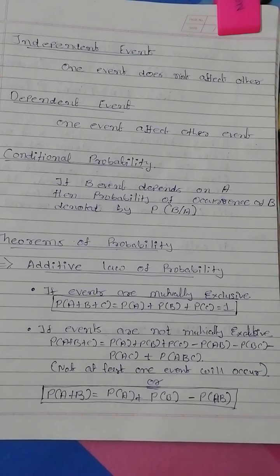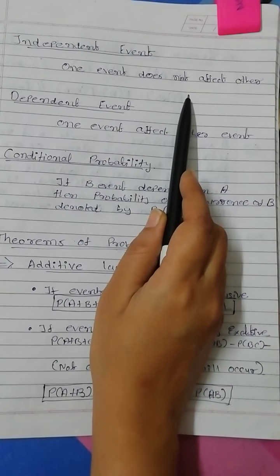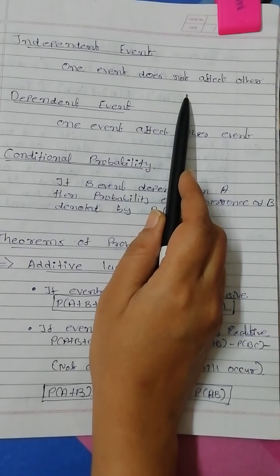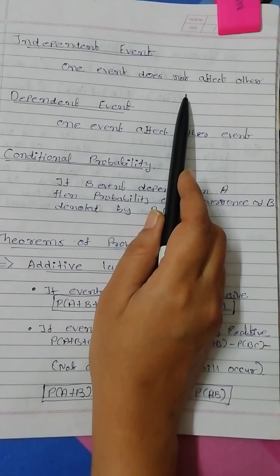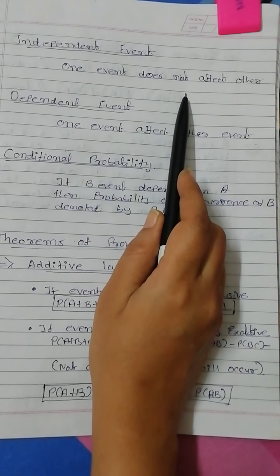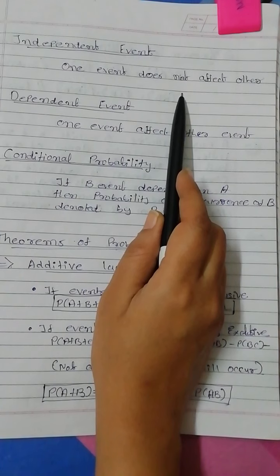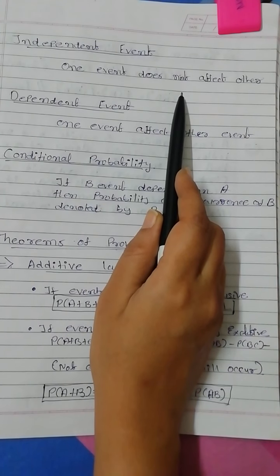Two events are said to be independent if the occurrence or non-occurrence of one event does not affect the probability of occurrence or non-occurrence of the other event. For example, if event A and B represent heads and tails while tossing a coin, both events are independent — they occur or don't occur on their own, not depending on any other event.